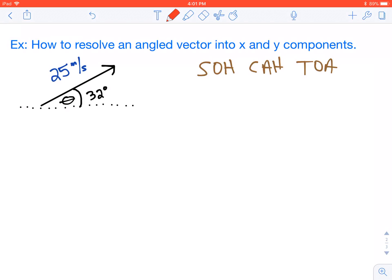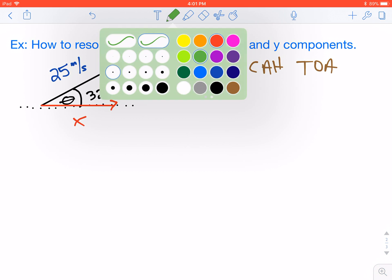In our problem here, we have an angled vector with an angle of 32 degrees with the horizontal, and its value is 25 meters per second. We know a vector always has a direction with a measurement. So, what we want to be able to do is take that resultant and break it into its x and y components.